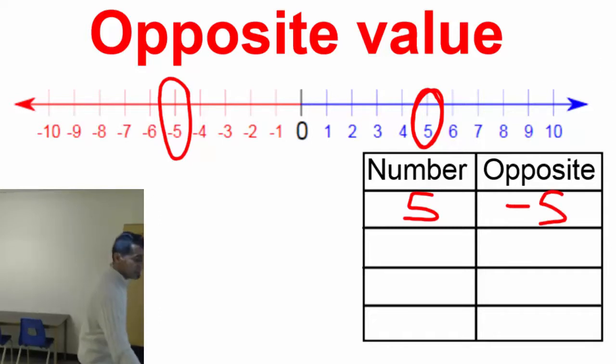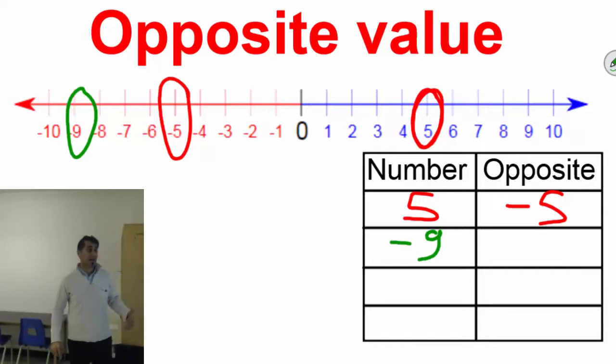And let's do another example. How about minus 9? Minus 9 is the number we are going to talk about. And opposite value of number 9 is on the other side. The same number.